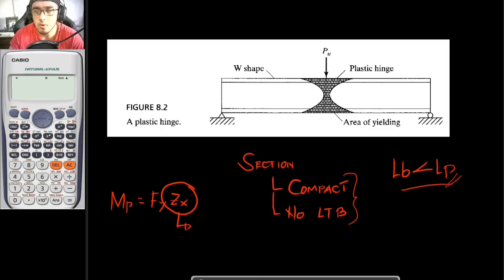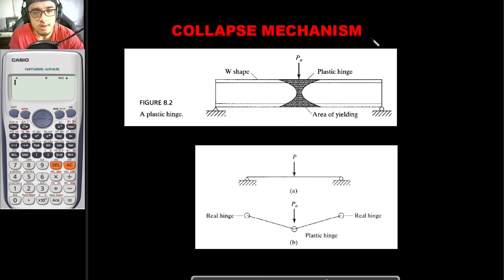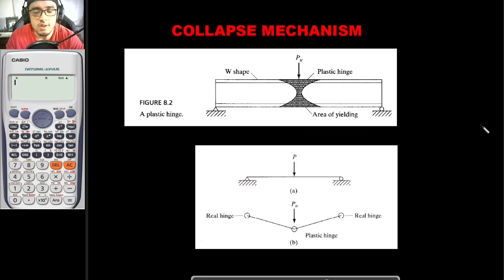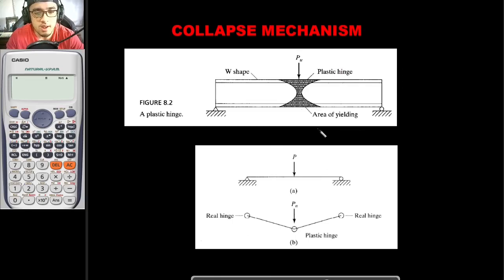Let's go straight to collapse mechanism. By definition, your collapse mechanism is the arrangement of your plastic hinges that permits your structure to collapse. For example, if you apply a load and a plastic hinge occurs at a point, consider that a hinge support does not resist moment. A real hinge and a plastic hinge function similarly in this sense — a roller support is also considered a real hinge in collapse mechanism terms because it does not resist any moment.